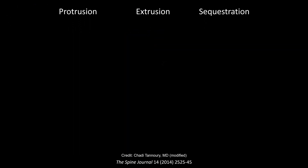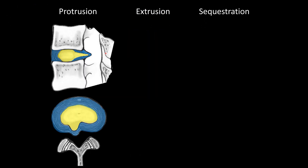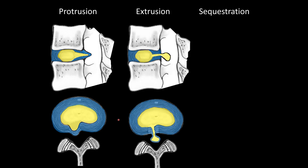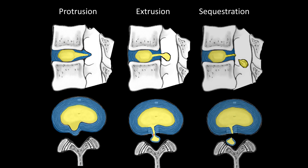For disc herniation classification: if the herniated head is smaller than the neck, either on the sagittal view or on the axial view, that's a protrusion. If the extruded material breaks off from the parent disc, that's sequestration.